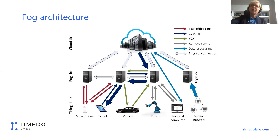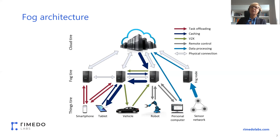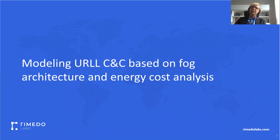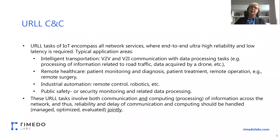On this slide, we can see some example applications and services like task offloading, caching, V2X communication, and remote control of robots. The width of the arrows represents the amount of data that is transmitted to various devices and nodes. Let us start with some models for URLLC communication and computing based on fog architecture and their cost analysis.